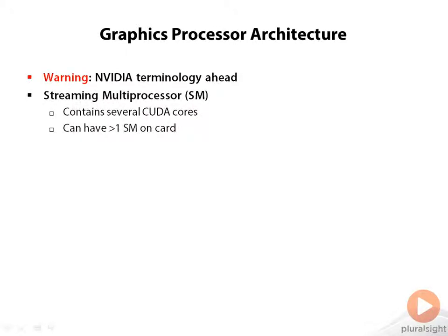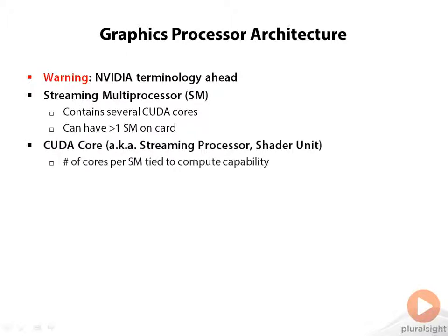The politically correct term for a GPU in CUDA terminology is streaming multiprocessor, or SM. The CUDA architecture is built around an array of these multi-threaded SMs. Each SM — and there can be many on the card — contains several CUDA cores, also known as streaming processors or shader units. The actual number of cores on an SM depends on the so-called compute capability of a device, and compute capability is a central theme of CUDA. We'll talk about it a bit later.